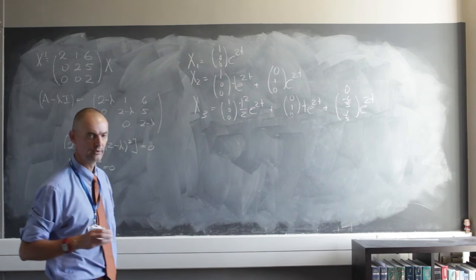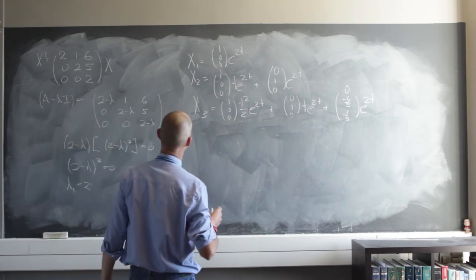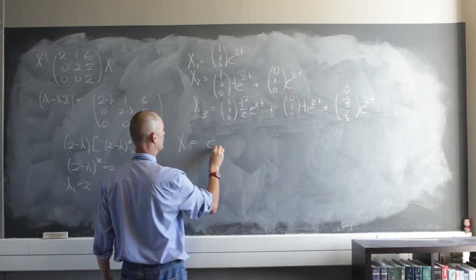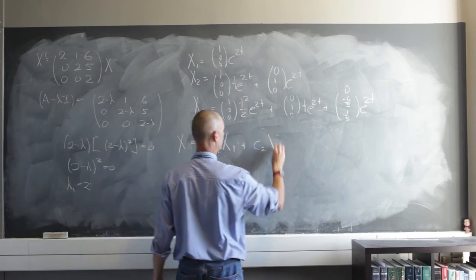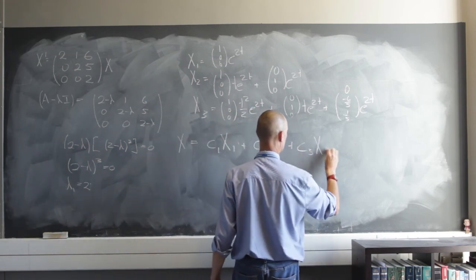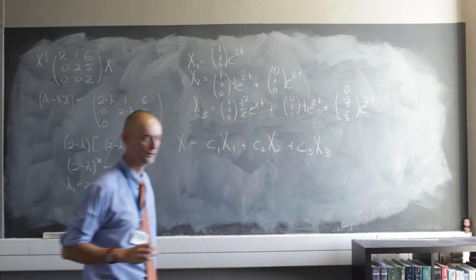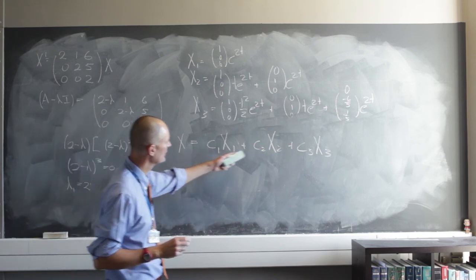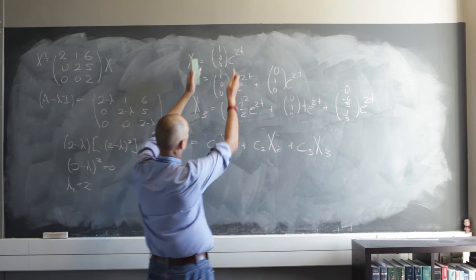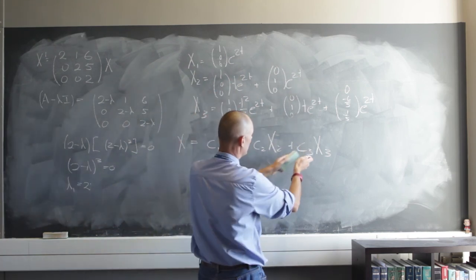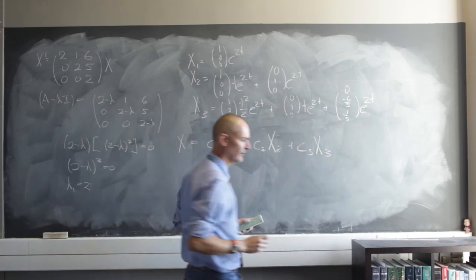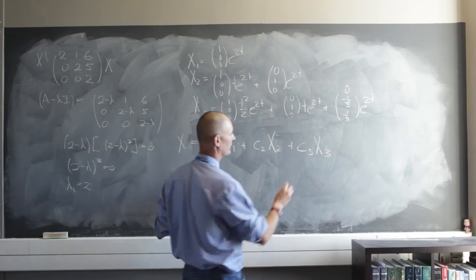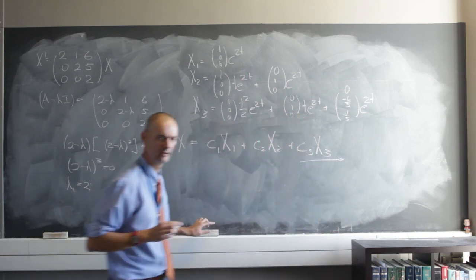The general solution set is x equals c sub one times x sub one, plus c sub two times x sub two, plus c sub three times x sub three. Since x sub one, x sub two, and x sub three are not constant multiples of each other, they each get their own constant. So the general solution is c sub one times that, plus c sub two times that whole expression, plus c sub three times that whole expression. It's quite easy to do.